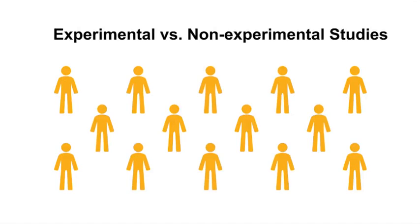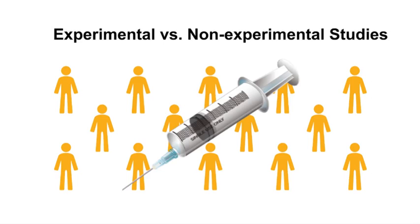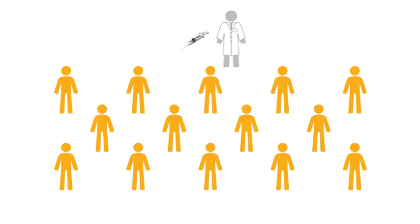The most important distinction of an experimental study design compared with a non-experimental or observational study design is the exposure assignment. One example of this would be randomizing one group of patients to get the new breast cancer chemotherapy drug and the other group of patients to receive the current standard chemotherapy drug. Recall that exposure is the intervention — for example, a new drug treatment. In an experimental study, the investigator usually determines who is exposed and who is not exposed, and the exposure or intervention is randomly allocated to study participants.